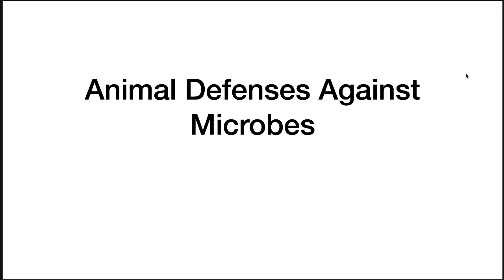We now begin a unit on the animal defenses against microbes. As you've learned throughout this semester, microorganisms are very good at figuring out how to grow almost everywhere. If we did not have an effective immune system to fight against these guys, we wouldn't last a minute. This is clearly shown in individuals that have mutations that leave them without an immune system — if they are not carefully protected from all the microorganisms in the environment, they very quickly succumb to infection and die.